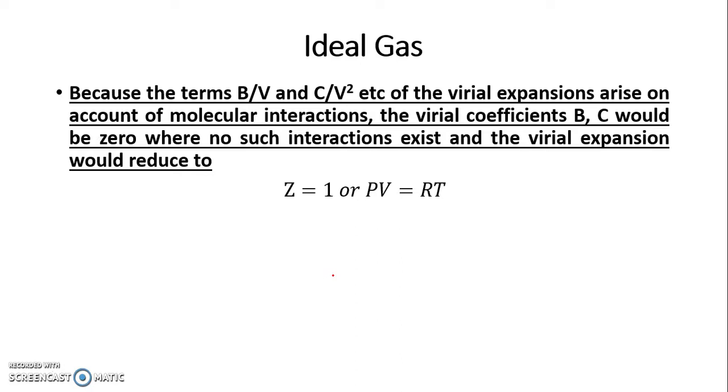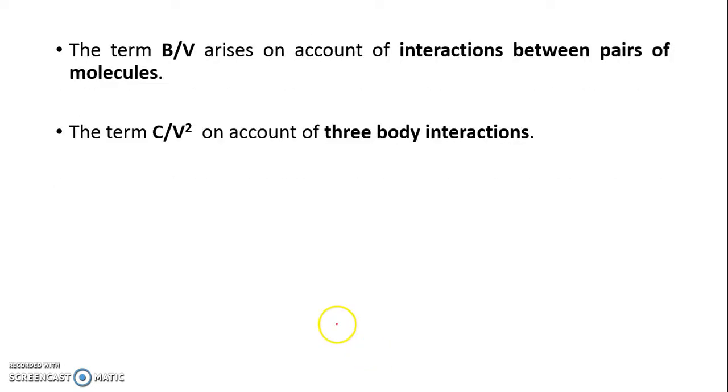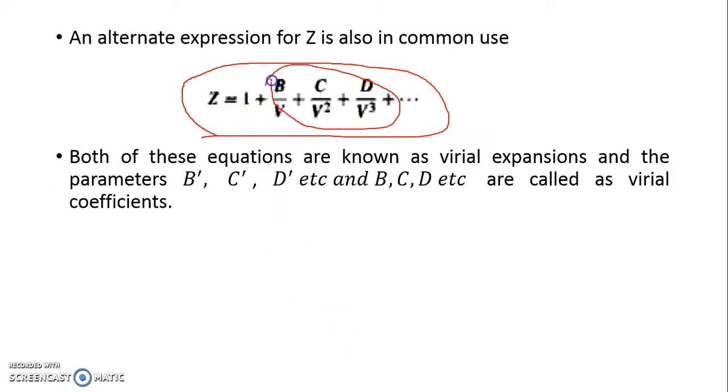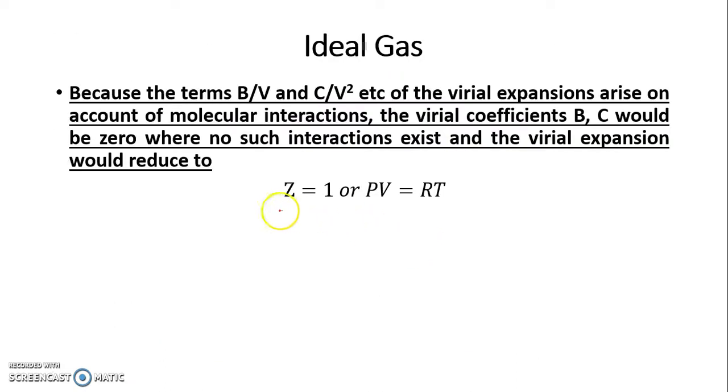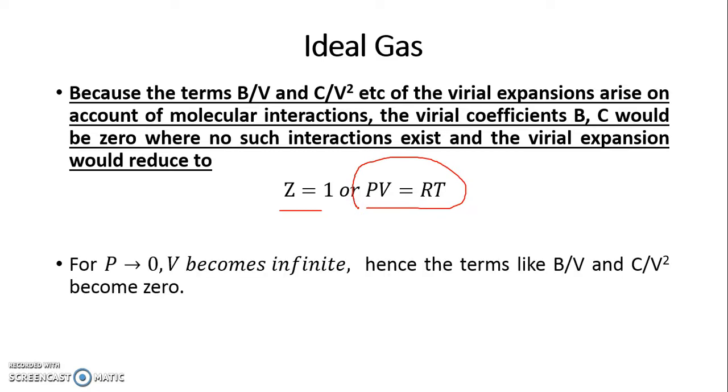Before we proceed further and discuss about the application of Virial Equation of State in PVT behavior, let us revisit the ideal gas characteristics. Because the terms b by v or c by v square arise on account of molecular interaction, the Virial Coefficients b, c would be zero where no such interactions exist, that is for the ideal gas. For ideal gas the equation reduces to z equal to 1, because b dash, c dash, d dash or b, c, d are zero. Since z equals 1, you can say PV equals RT, which is something we already know. As p tends to zero, v becomes infinite, and hence terms like b by v and c by v square also become zero. For an ideal gas, z has to equal 1.